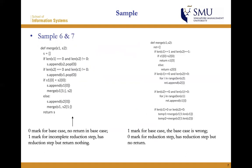For sample six, I will give zero marks for the base case because there is no return in the base case, and one mark for the incomplete reduction step because it has a reduction step but returns nothing. For sample seven, I will give one mark for the base case — though the base case is actually wrong — and zero marks for the incomplete reduction step because it has a reduction step but no return.